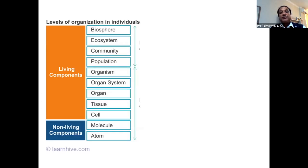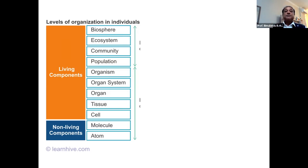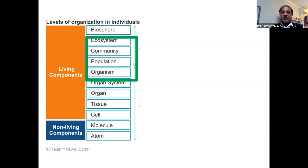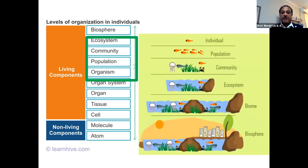Quickly looking at the levels of organization: the living components are the biotic components. At the bottom level, all living components are made up of cells, which make tissue, tissue makes organs, organ systems make organisms, and then we have population, community, and so on. Our lecture will be based on these levels as part of animal ecology.